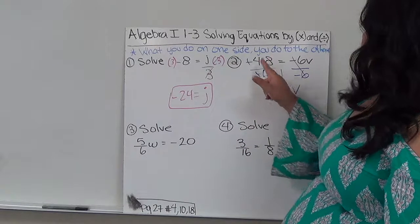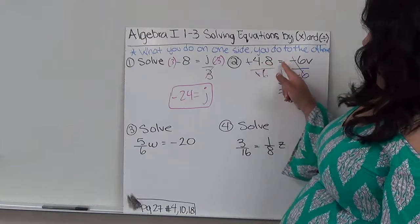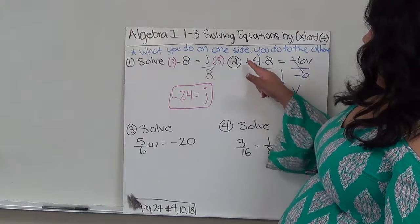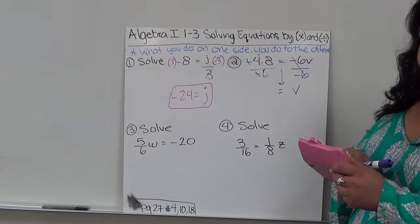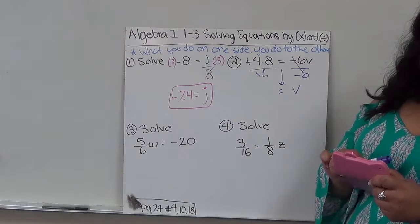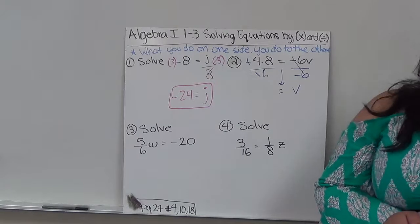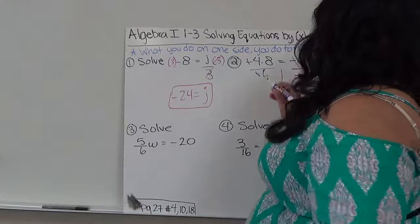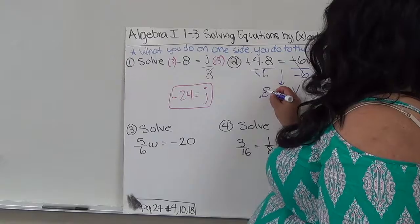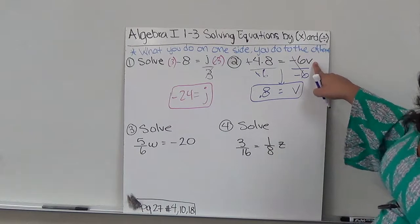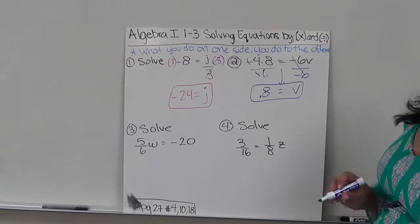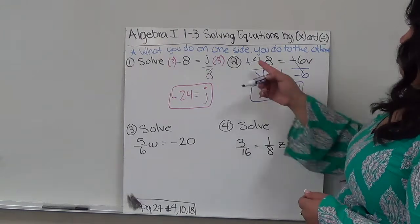So negative 4.8 divided by negative 6. These negatives cancel out, giving me a positive. And 4.8 divided by 6 is 0.8. So I end up with positive 0.8. If I think that I got it wrong, I'm just going to put 0.8 in for V to see if it gives me negative 4.8.